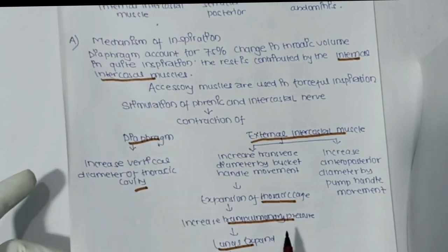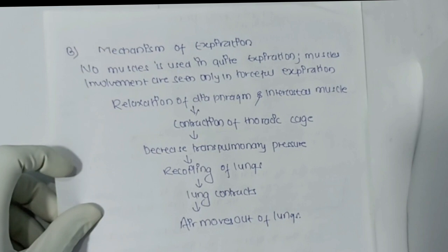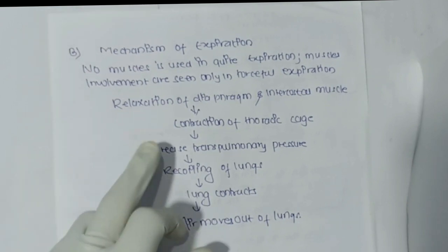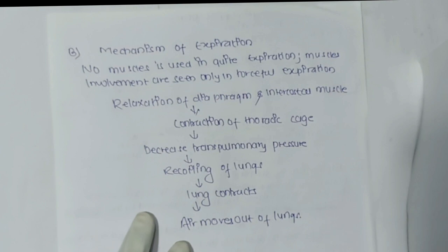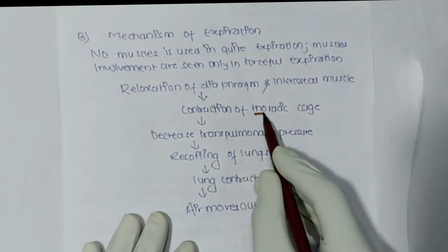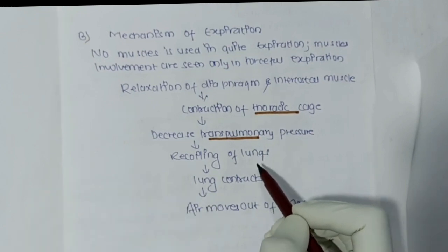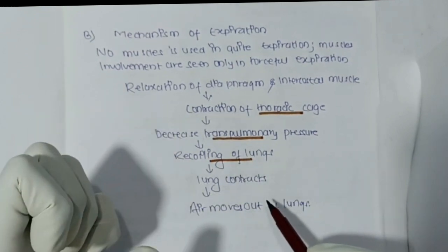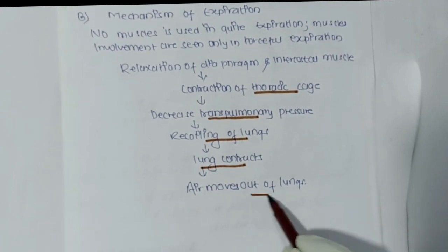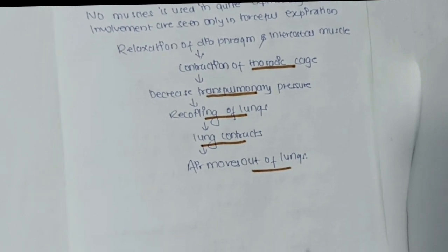In the mechanism of expiration, no muscles are used in quiet expiration — muscle involvement is seen only in forceful respiration. Relaxation of the diaphragm and intercostal muscles causes constriction of the thoracic cage, which decreases trans-pulmonary pressure. When pressure decreases, recoiling of the lungs begins; after recoiling, lungs constrict and air moves out. In this way we have completed the anatomy and physiology of lungs. Please like, share, and subscribe to our YouTube channel.